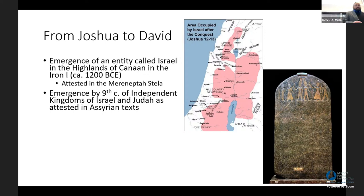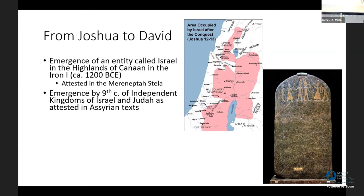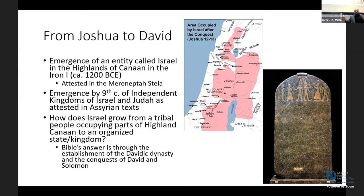We also know that within the next three to four hundred years, we will see the emergence of a kingdom — not just a group of people who are Israelites, but a state politically dominant in this region. In fact, two states known as Israel, showing up in Assyrian texts. Sometime between 1200 and about 850 BC, we see the transformation of a people roaming the highlands into an organized kingdom recognized by foreign imperial powers.